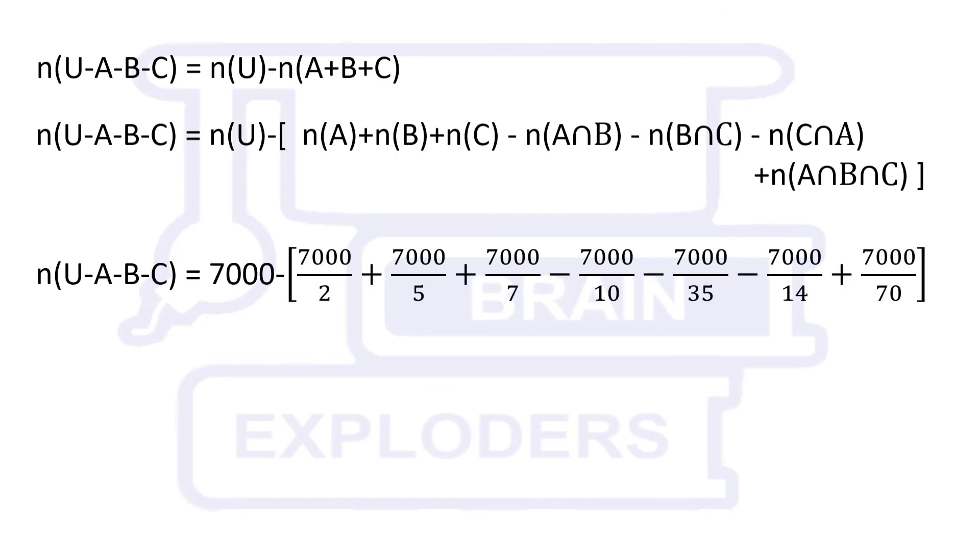Put these values in the obtained equation. We can simplify it for the particular case, but here we will obtain a general case. Take 7000 as common and use products of prime numbers to represent all these numbers here. Now factorize it.